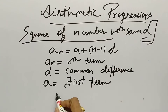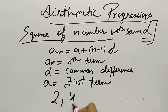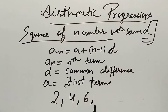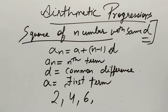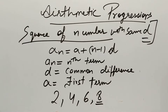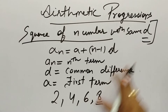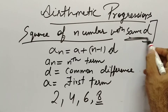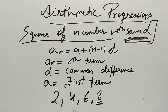Let's take a first example: 2, 4, 6. If I ask you what the next term is, your answer will be 8. So AP is a sequence of numbers with a common difference. Here d means common difference. The answer to this question is 2, 4, 6, 8.